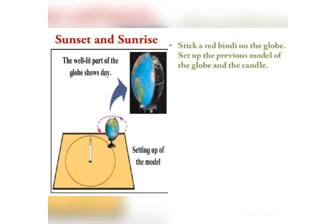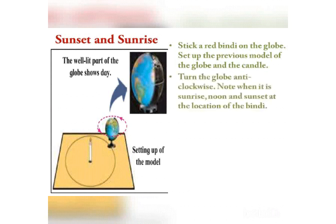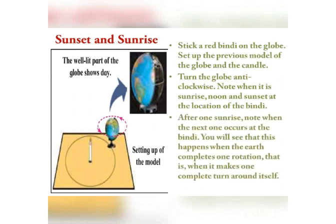Now let us understand sunrise and sunset. Stick a red bindi on the globe and set up the previous model of the globe and candle. Turn the globe anti-clockwise and note when it is sunrise, noon, and sunset at the location of the bindi. After one sunrise, note when the next one occurs at the bindi. You will see that this happens when the Earth completes one rotation - one complete turn around itself. You have to note that the bindi will come back to its same position when the Earth completes one circle. This process goes on continuously as the Earth is rotating around itself.